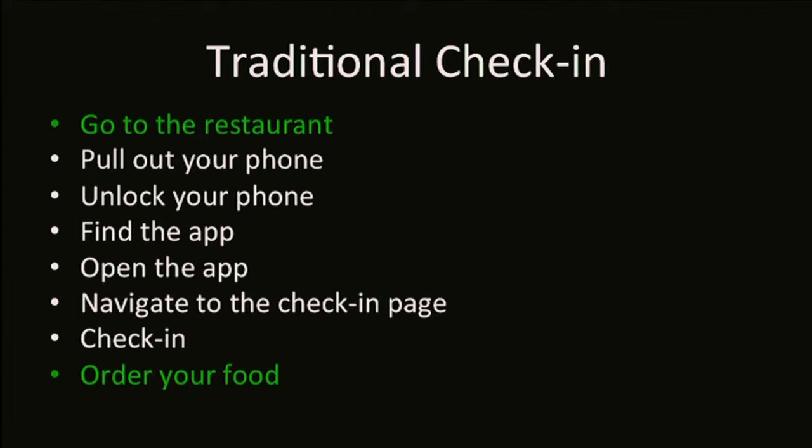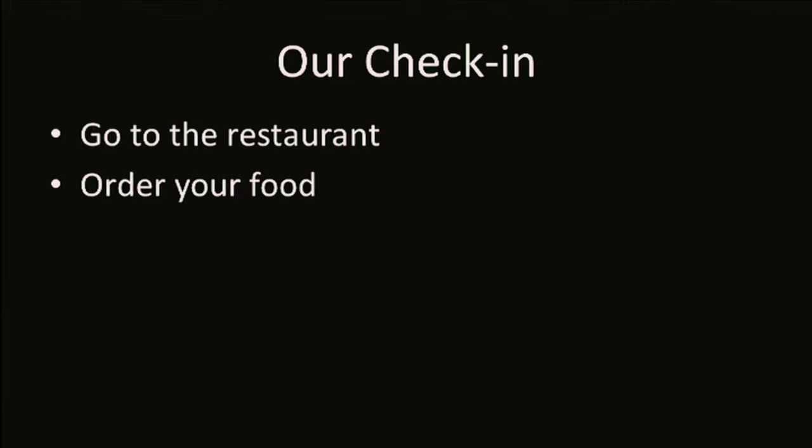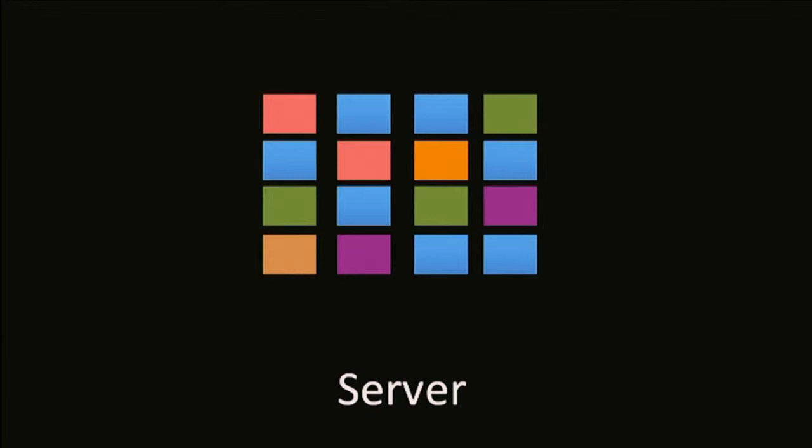With our system, the user simply has to go to the restaurant and order their food. We're going to do everything else for you. You download our app, and then you just continue about your day as normal. We're going to keep track of the different places you go, where you're at, what time you go there, how long you stay, and we're just going to store these visits on your phone. Occasionally, we're going to send them off to our server, where the first thing we're going to notice is not all of these are restaurants — we respect your privacy, and we're going to go ahead and get rid of those.